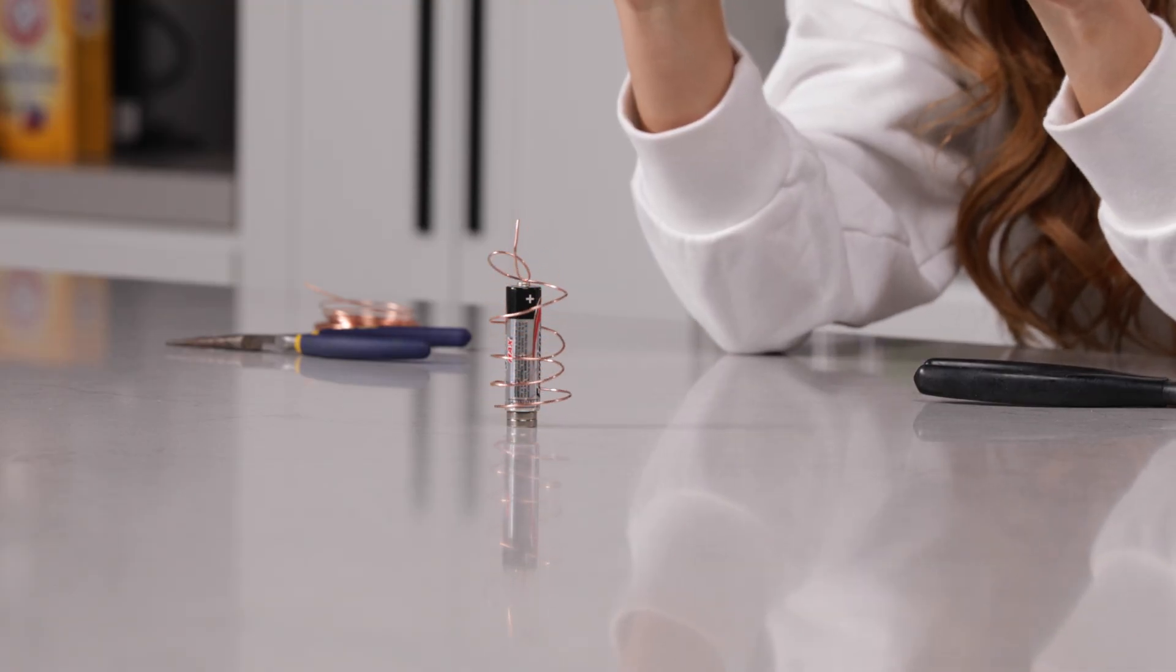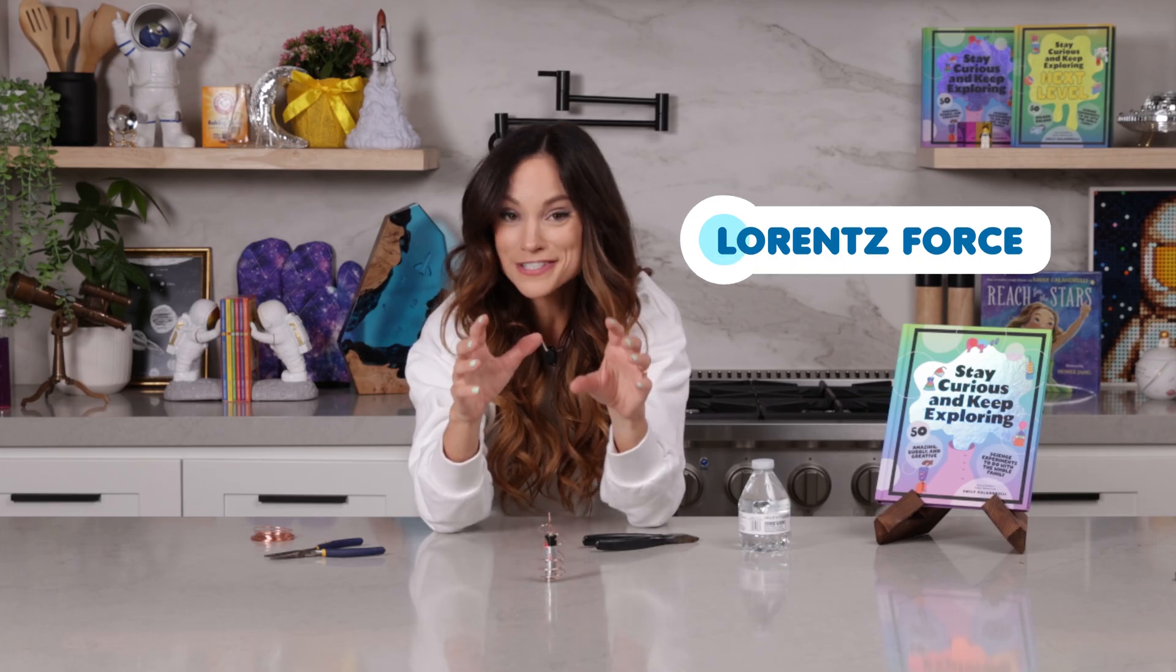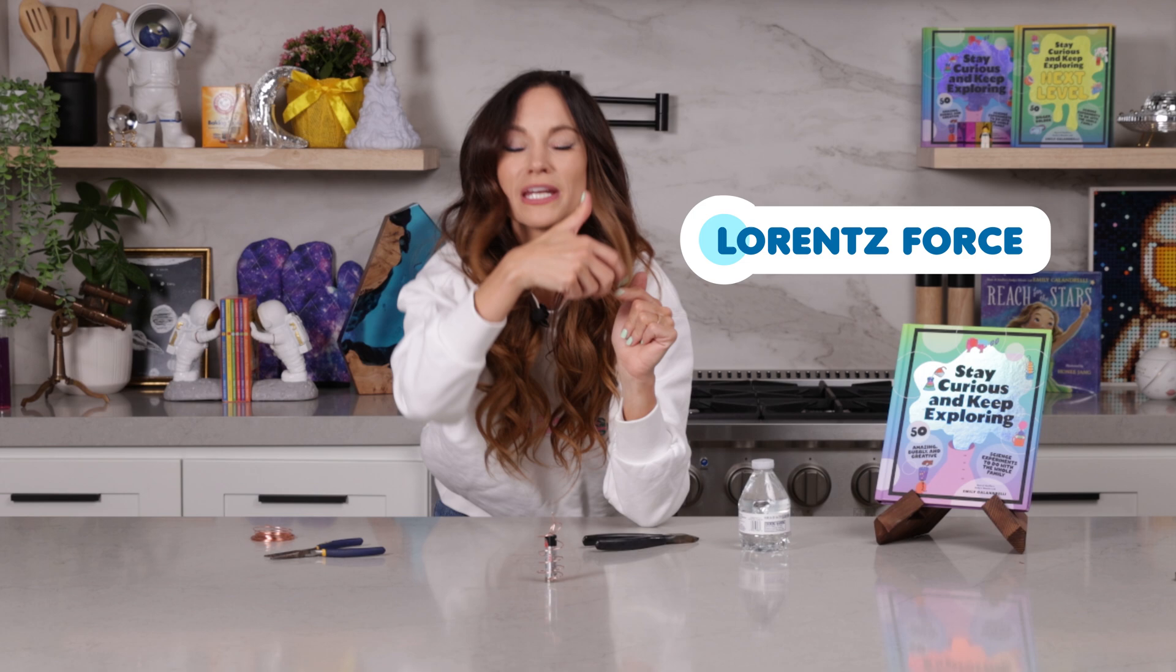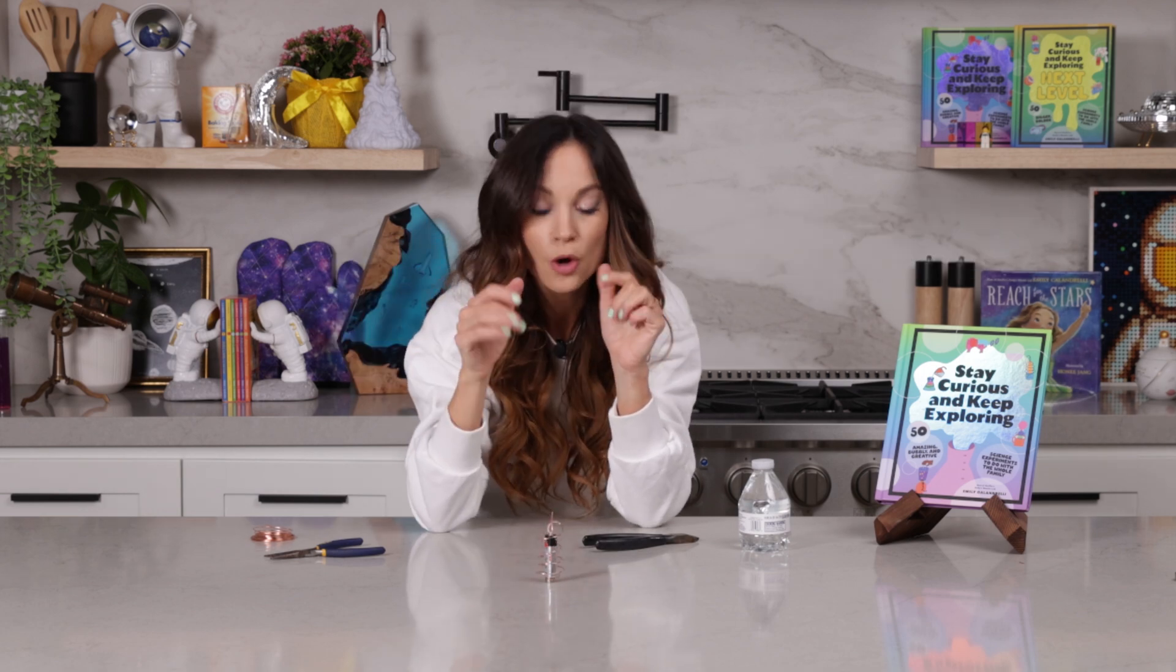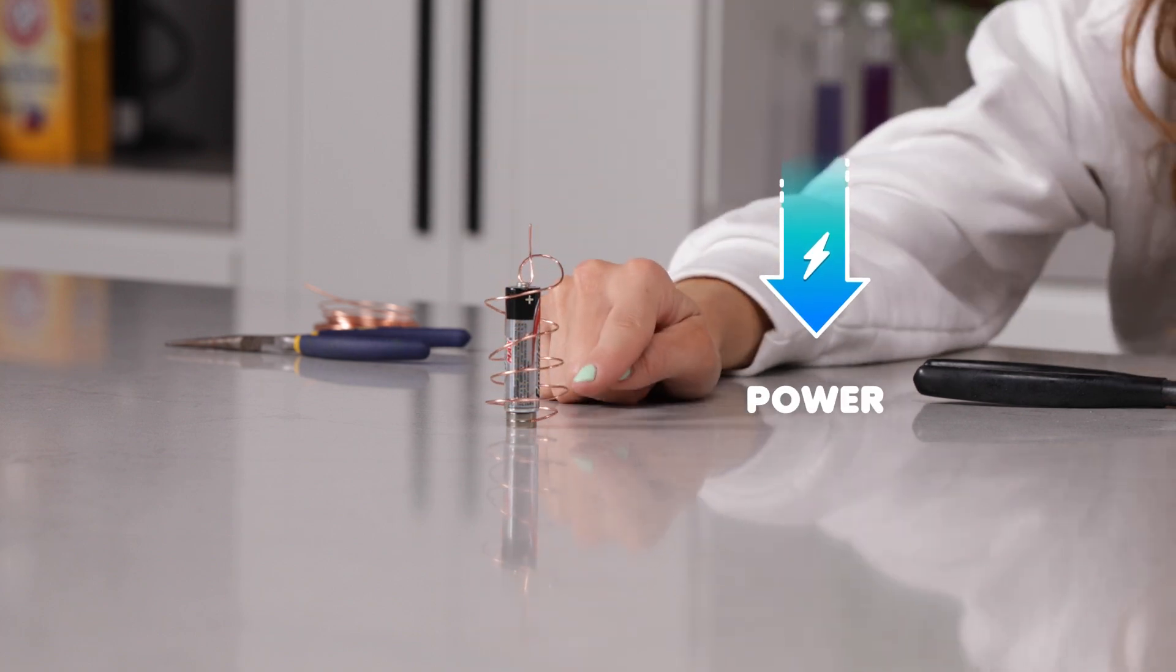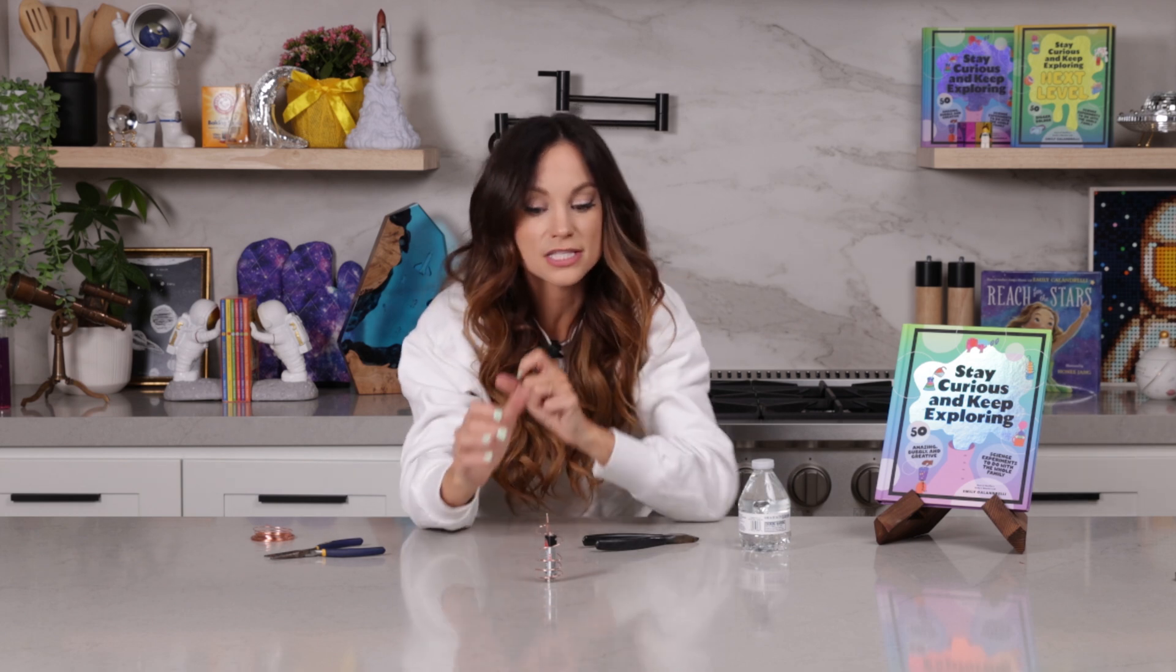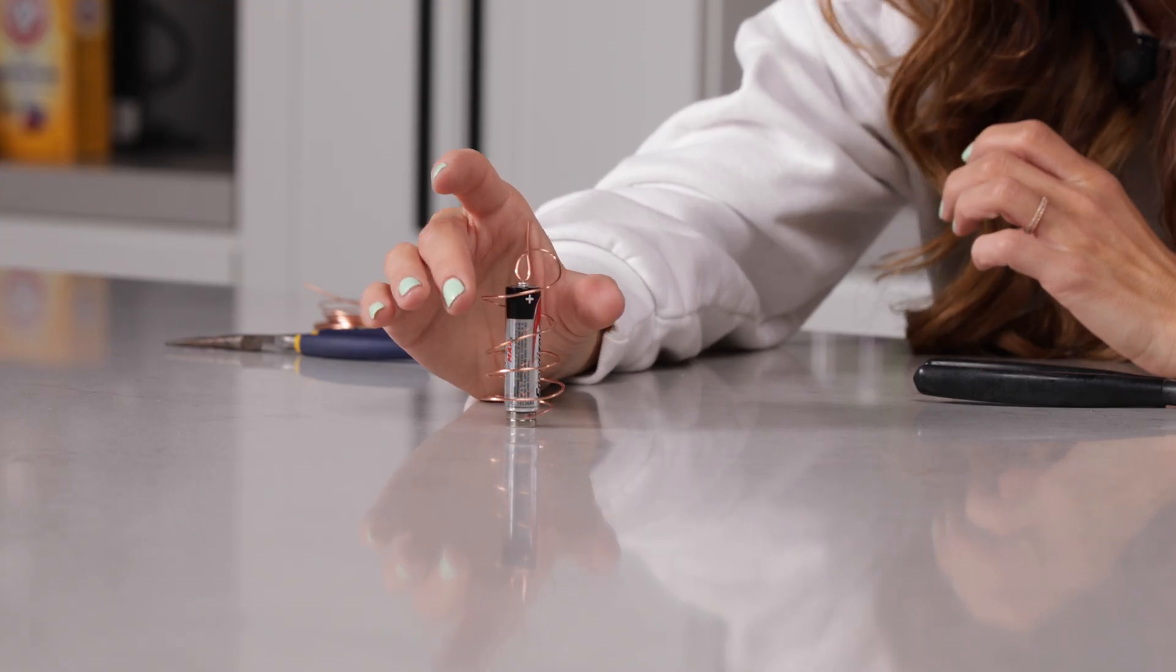Now, if you're also having a hard time balancing it, what might be happening is that your Lorenz force is too strong. It's spinning it too quickly. One of the ways to lower the Lorenz force is to use less powerful magnets. So if you have a bunch of disc magnets stuck together, maybe just use one or two. If you have the big ones, maybe use the smaller ones and that will help you balance your wire dancer.